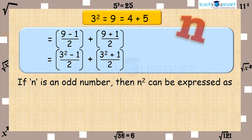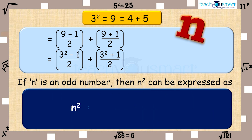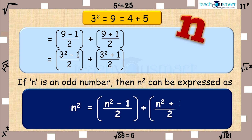If n is an odd number, then n square can be expressed as: n square equals (n square minus 1) divided by 2, plus (n square plus 1) divided by 2.